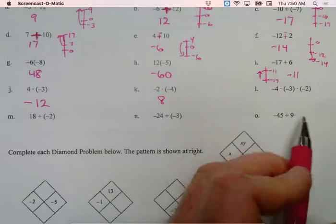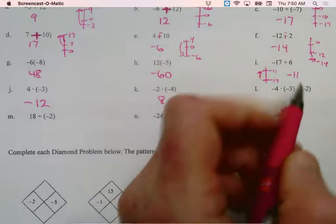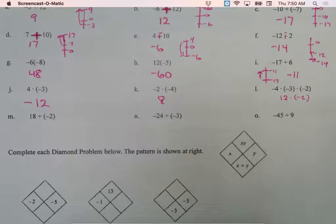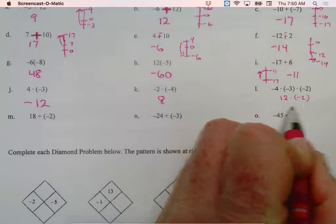All right. Now we have 3. Negative times a negative is a positive 12 times a negative 2. That's going to be a negative 24.